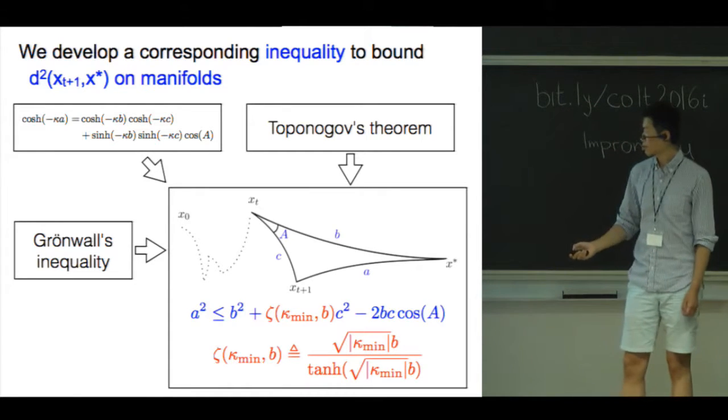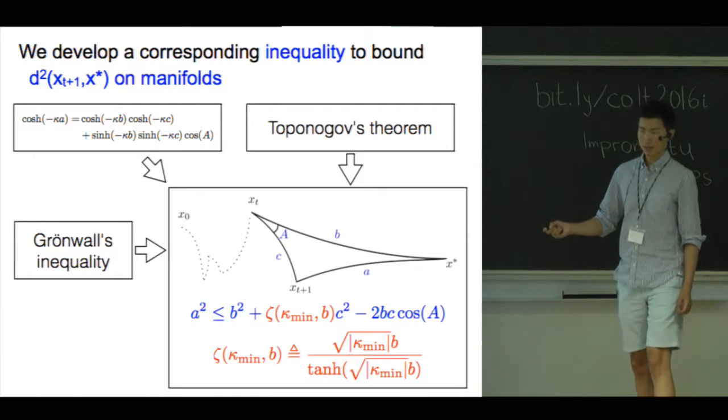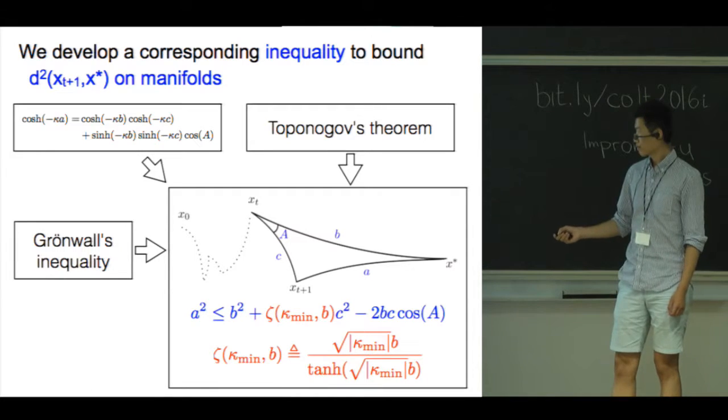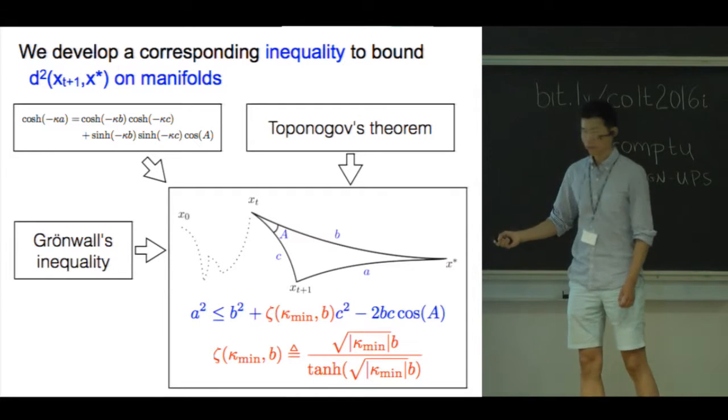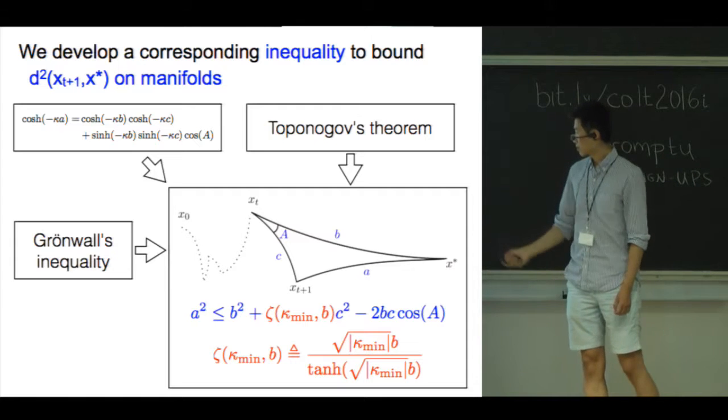When we put these three things together, we are able to bound the square distance between the vertices of any geodesical triangle in any geodesically convex set on a manifold where the sectional curvature is lower bounded.